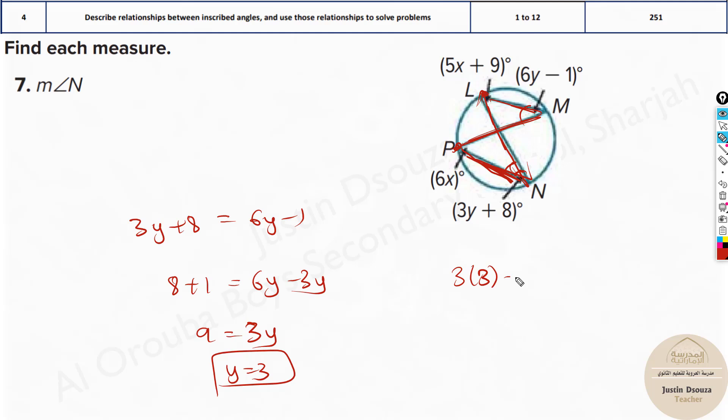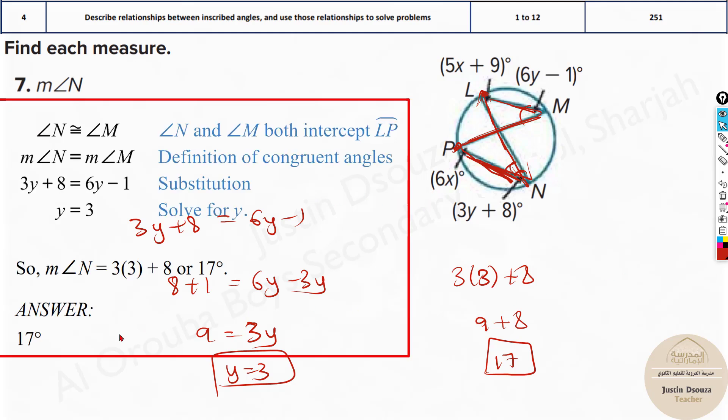So it will be 3 times 3 plus 8. It is 9 plus 8, so it will be 17. So measure of angle N is 17 degrees. That is the answer.